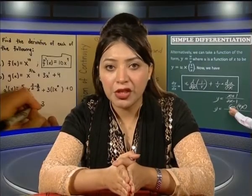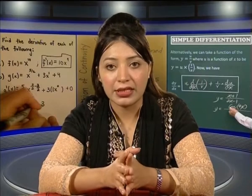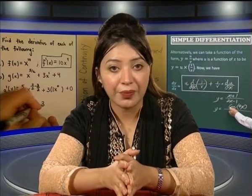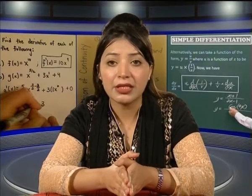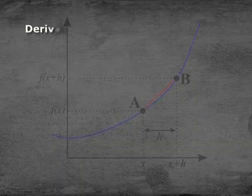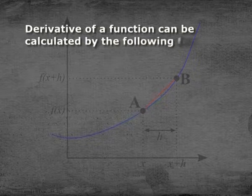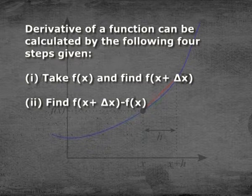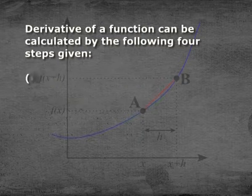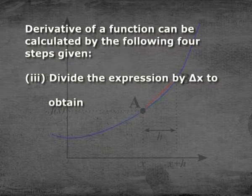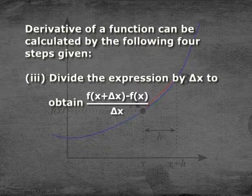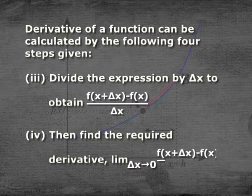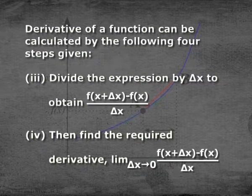Let f(x) be a function and f′(x) its derivative at any point x. The value f′(a), if it exists, is called the derivative of the function at x = a. If f′(a) does not exist, we say f(x) is not differentiable at x = a. The derivative of a function can be calculated by the following four steps: first, find f(x + Δx); second, find f(x + Δx) − f(x); third, divide by Δx to obtain [f(x + Δx) − f(x)] / Δx; fourth, find the limit as Δx→0.